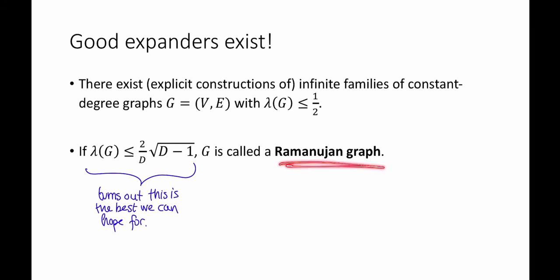So being a Ramanujan graph is much stronger than just having decent expansion. Basically, it means you have optimal expansion. We do have constructions of Ramanujan graphs for some parameters, but it's actually still an open problem to get explicit constructions for all settings or actually even to show that they exist for all settings.